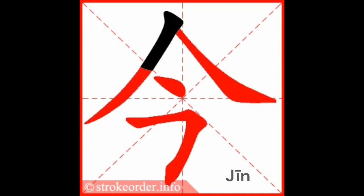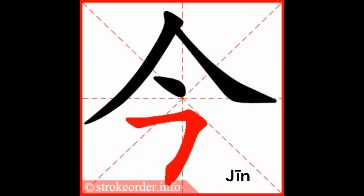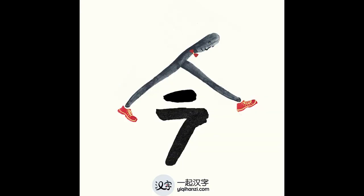This is a fun character in the Chinese language because the character Jīn looks like a person jumping over a hurdle, which means to focus on the present and get things done today. This makes it easier to learn.